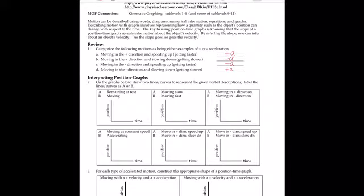On the graph below, draw two lines or curves and give a verbal description, labeling them A or B. A is remaining at rest, so that's just a straight horizontal line — your position is not changing because you're at rest. B is just moving, so you're going up on the y-axis because you're increasing your position over time.